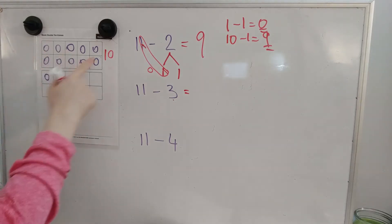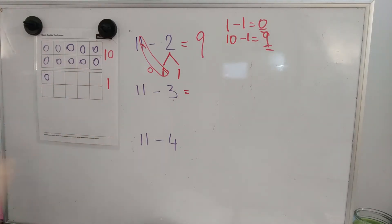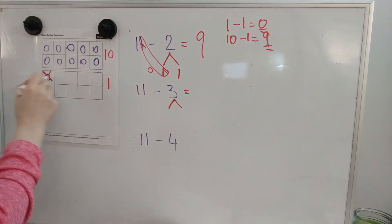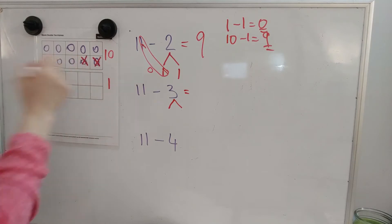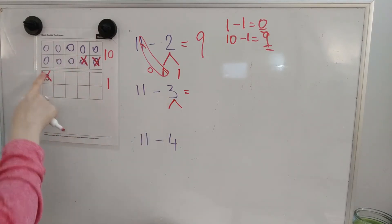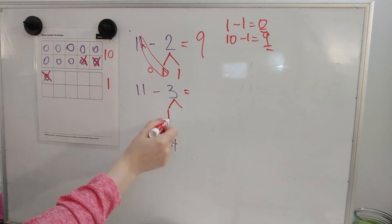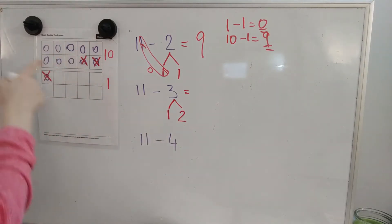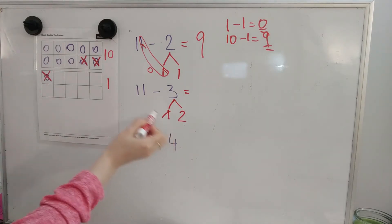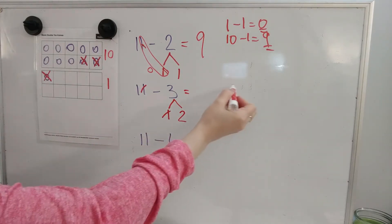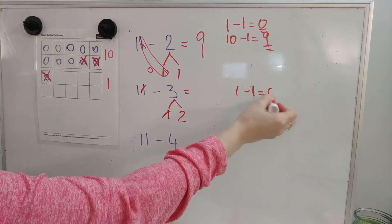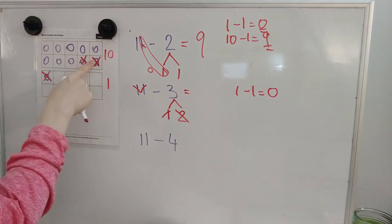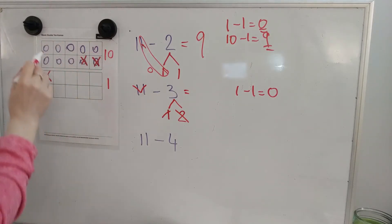Again, 11 has a 10 and a 1. I'm going to take away 3. 1, 2, 3. I took away 1 from the 1's place. And then I took 2 from the 10. I took 1 from the 1's place. 1 minus 1 is 0. So I'm taking the 2 from the 10. 10 minus 2 is 8.